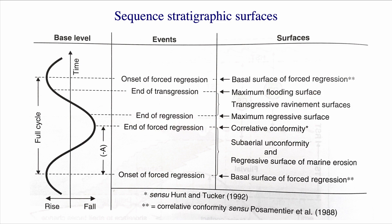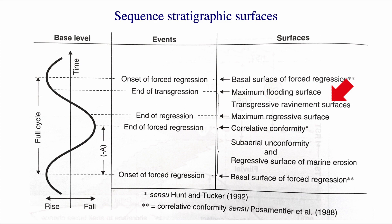Then base level starts to rise — that's a transgression. The transgression is marked by its beginning and its end. The beginning of the transgression is characterized by the maximum regressive surface, and at the top of this transgression we have the maximum flooding surface. In between, we can have the transgressive ravinement surface — or surfaces, since these can be relatively non-extensive surfaces found at different places — but they are characterized by erosion.